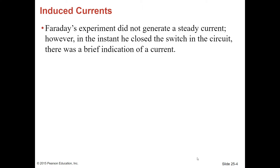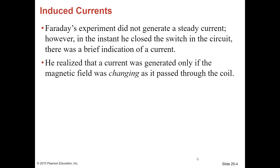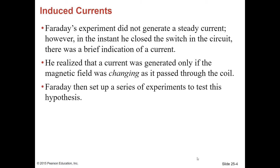Faraday's experiment did not generate a steady current. However, in the instant he closed the switch in the circuit, there was a brief indication of current. He realized that a current was generated only if the magnetic field was changing as it passed through the coil. Faraday then set up a series of experiments to test this hypothesis.